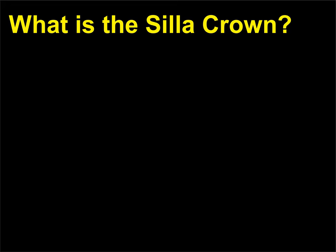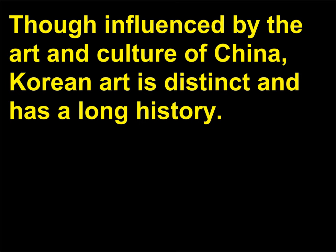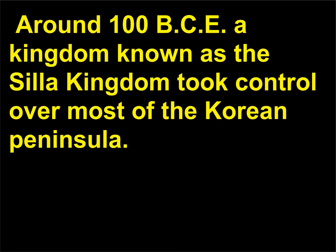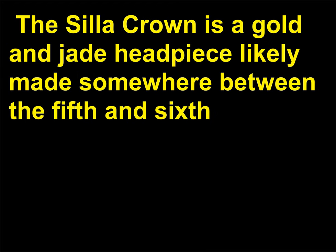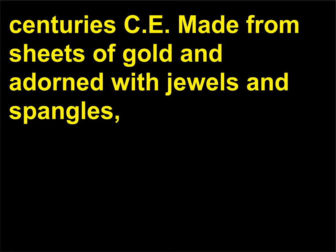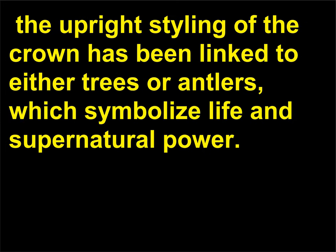What is the Silla crown? Though influenced by the art and culture of China, Korean art is distinct and has a long history. Around 100 BCE, a kingdom known as the Silla Kingdom took control over most of the Korean peninsula. The Silla crown is a gold and jade headpiece likely made between the 5th and 6th centuries CE, made from sheets of gold and adorned with jewels and spangles. The upright styling of the crown has been linked to either trees or antlers, which symbolize life and supernatural power. It is possible that this crown was either ceremonial or never meant to be worn at all.